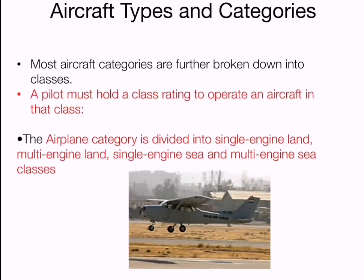Multi-engine land means the aircraft has two or more engines and only operates on land. Single engine sea is a single engine aircraft which operates on water, and multi-engine sea is an aircraft with more than two engines which operates on water. Those are the different classes of the airplane category.